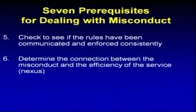The next prerequisite is that you need to determine the connection between the misconduct and the efficiency of the service — one of the three most important things to establish in any disciplinary action. How does what the employee did wrong affect the agency or their work? What if it happened off-duty? For example, if a law enforcement officer had a drug possession conviction for marijuana, that's probably a pretty serious connection to their job since they're tasked with enforcing those laws.